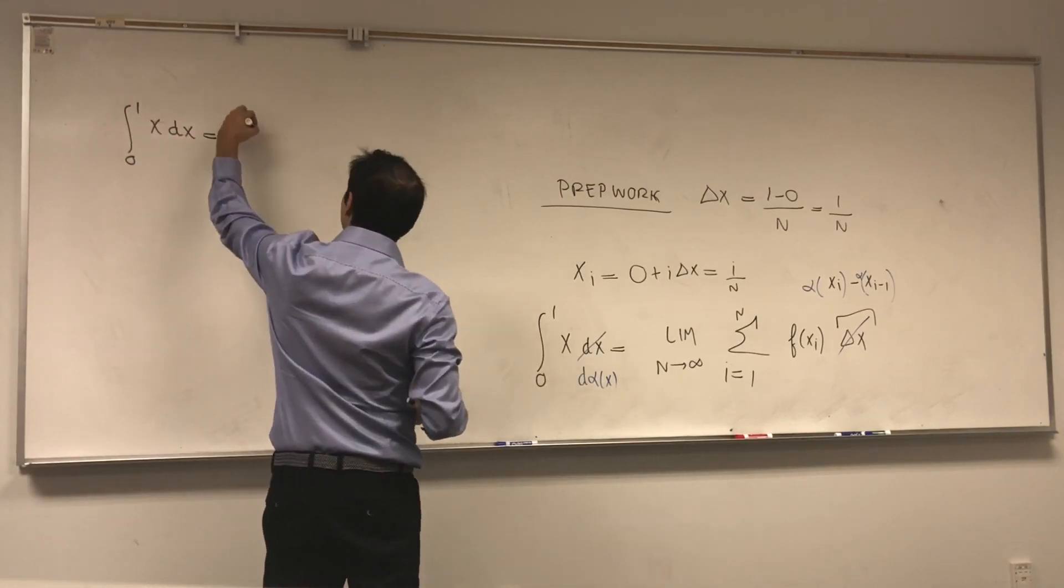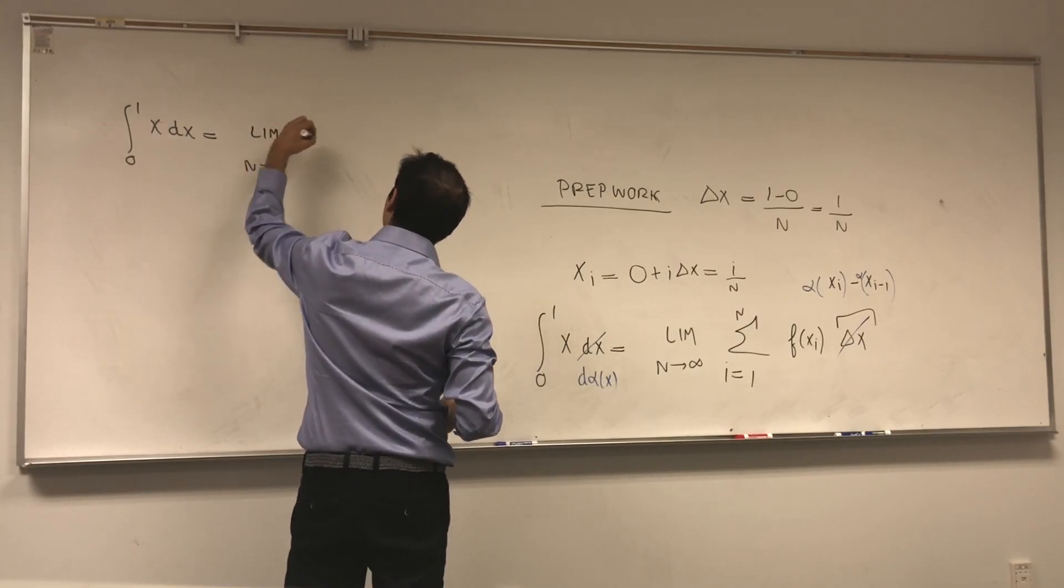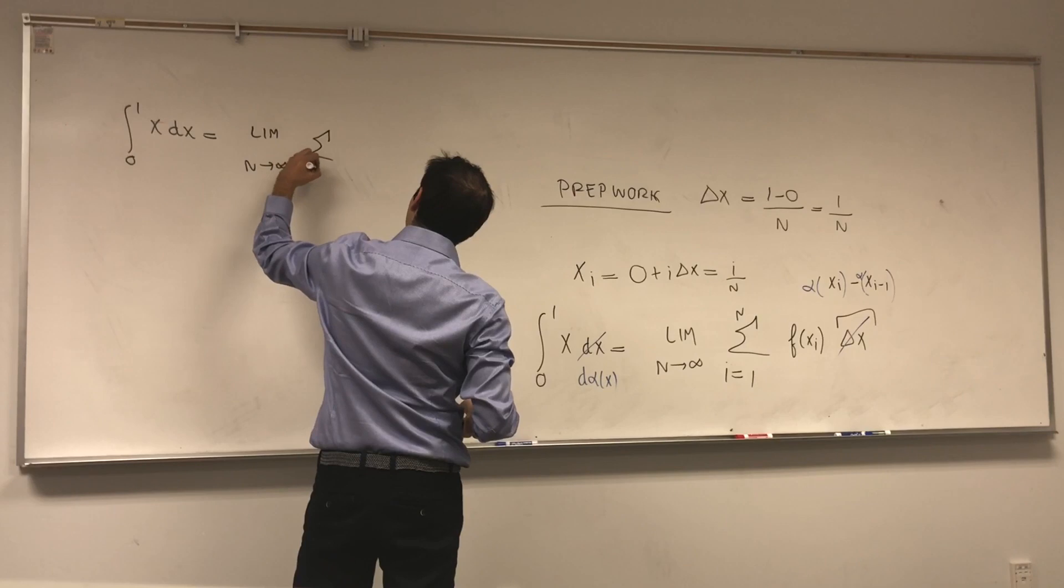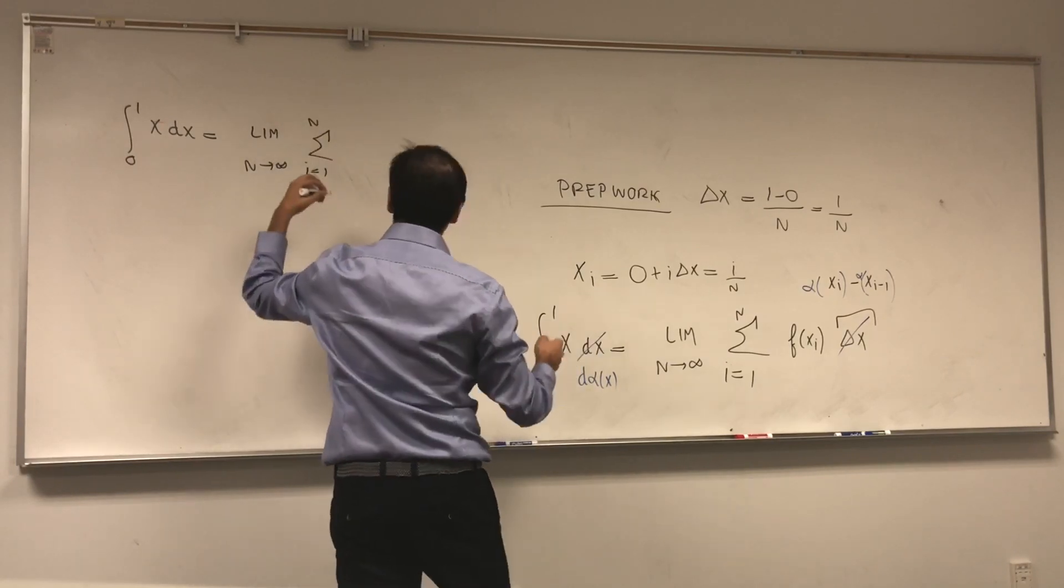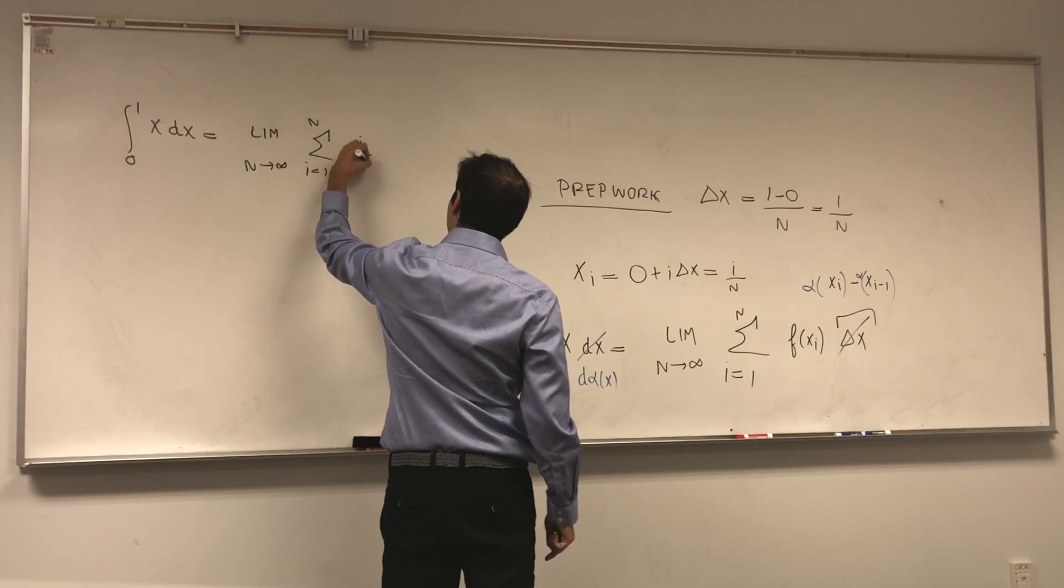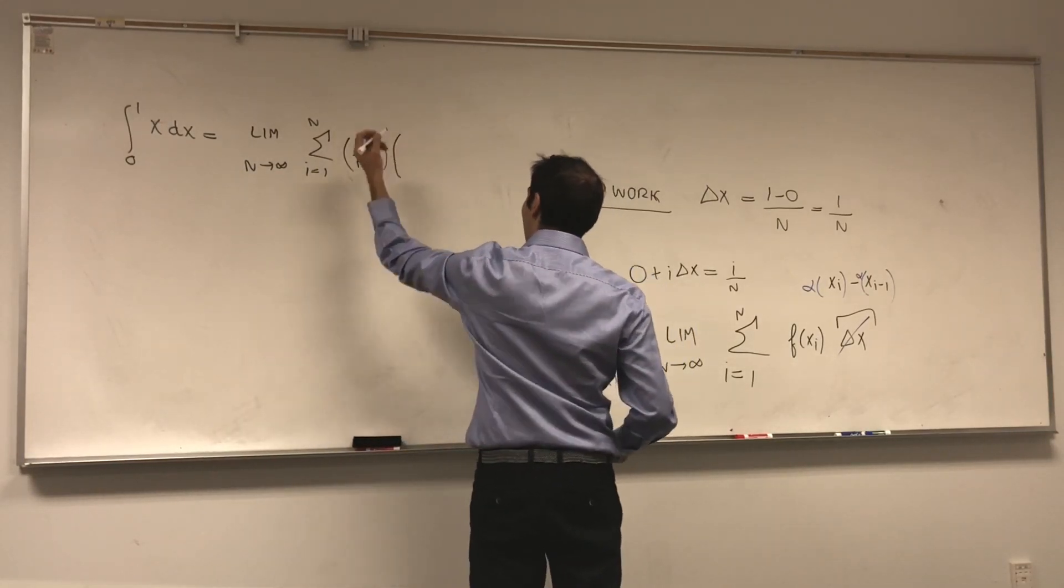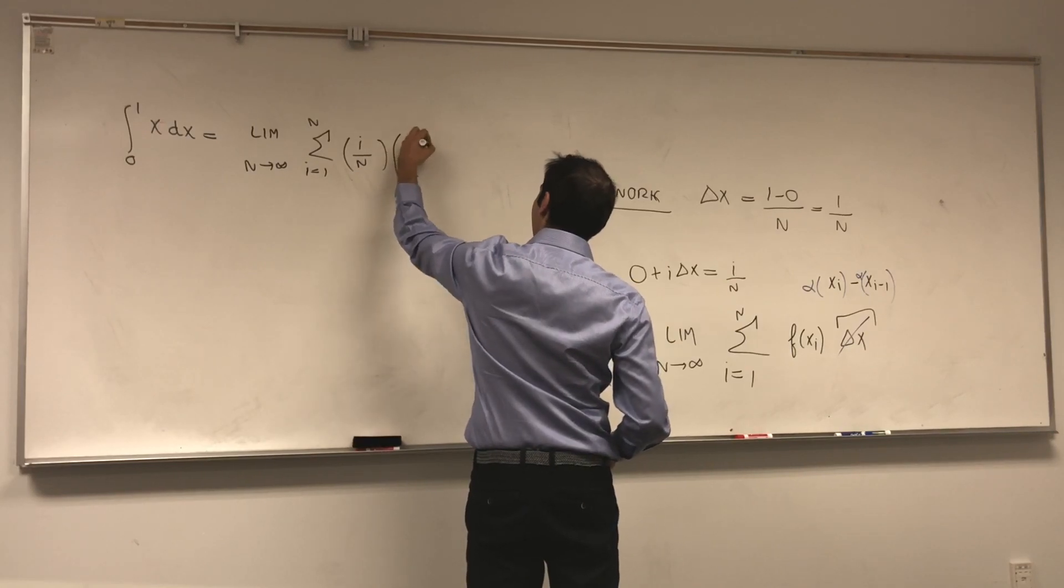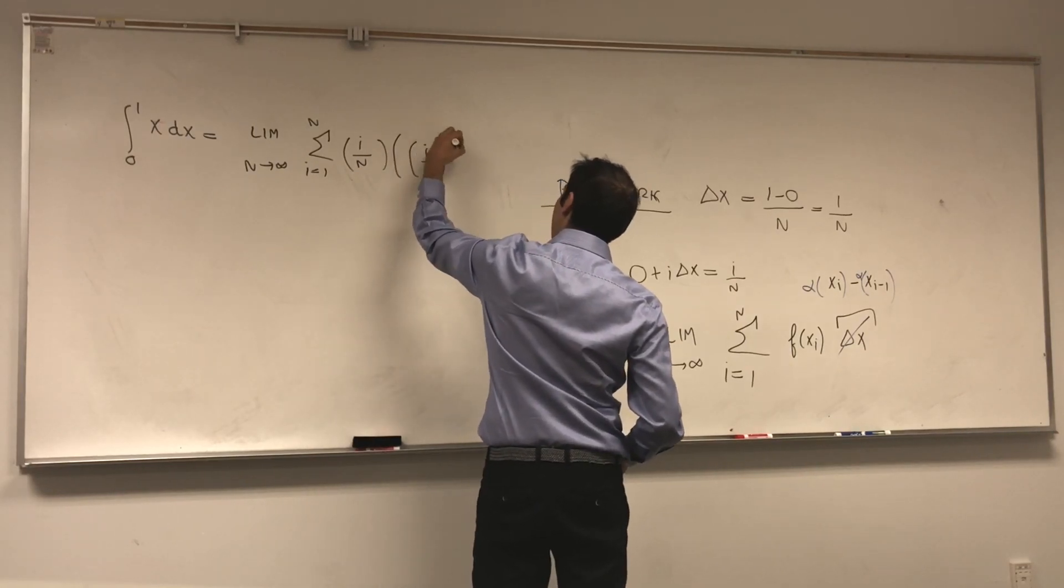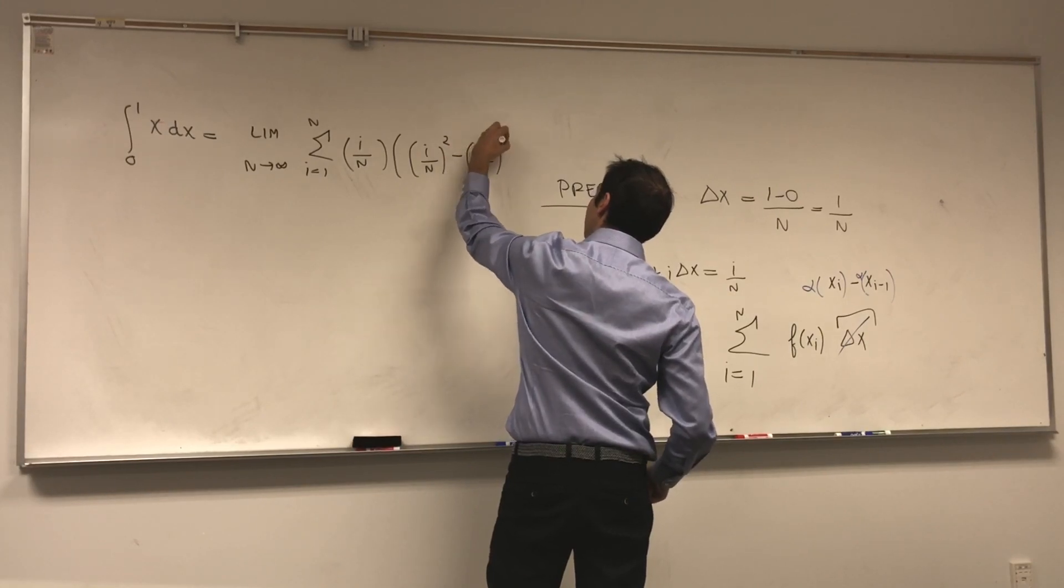So let's calculate that integral from 0 to 1 of x d alpha x, that equals to limit n goes to infinity of sum i from 1 to n of f of x_i, which is x_i, which is i over n. And then alpha of x_i minus alpha of x_{i-1}, that's i over n squared minus (i-1) over n squared.